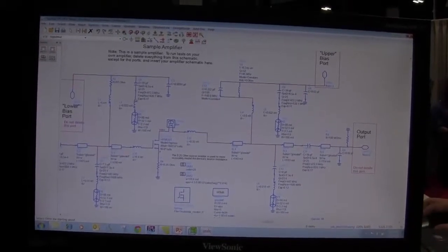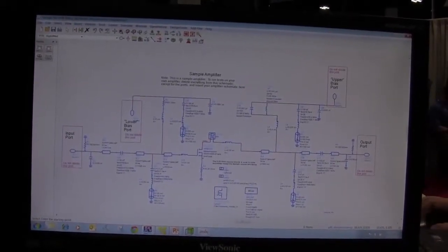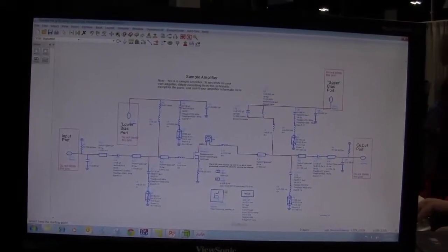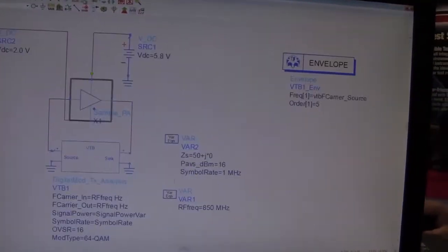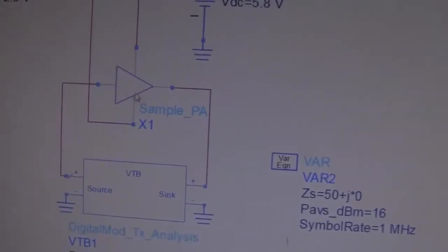If I push into it, you can see it's a sample amplifier with input, output, and the bias—lower bias and upper bias. Once you have this design, you can just insert it. We call it a DUT.